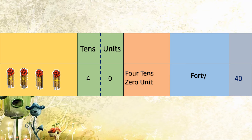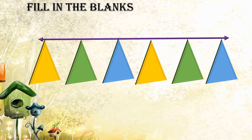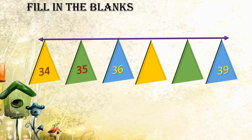Dear children, again we will go through fill in the blanks. Three numbers are given: 34, 36, and 39. What will be there in the blanks? After 34 comes 35; 36 is given; then 37, 38; 39 is already given. So we have written from 34 till 39 in serial order.